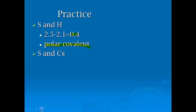Then you get to sulfur and cesium, and the difference is 1.8. We always make these numbers positive. Sometimes we have to rearrange them, but you always want to make it a positive number. That one's going to be ionic.